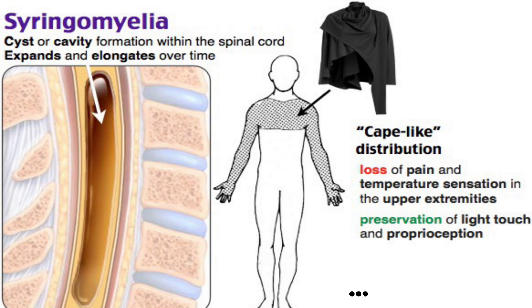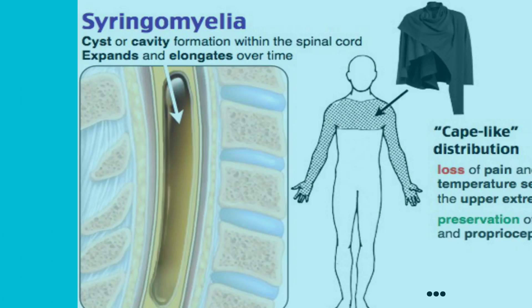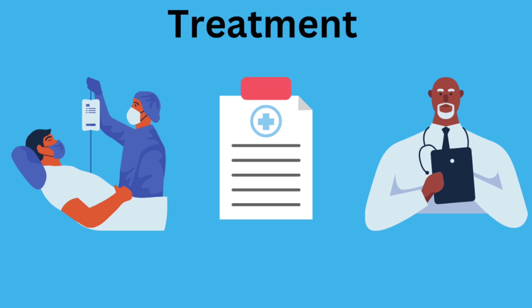This pictorial presentation shows a cape-like distribution of loss of pain and temperature sensation, while other sensory modalities are intact, illustrating the cavity formation in syringomyelia.